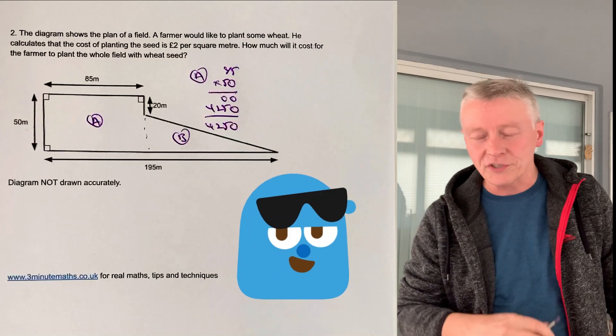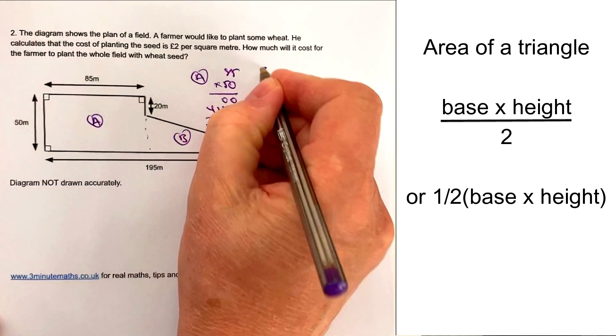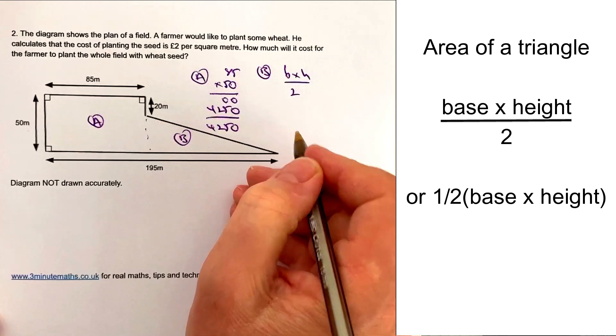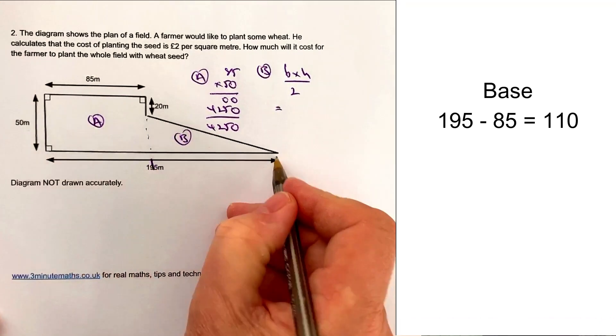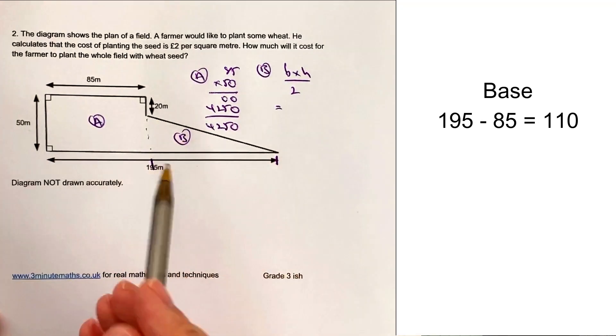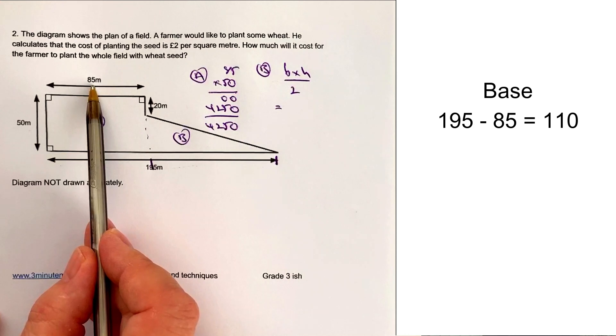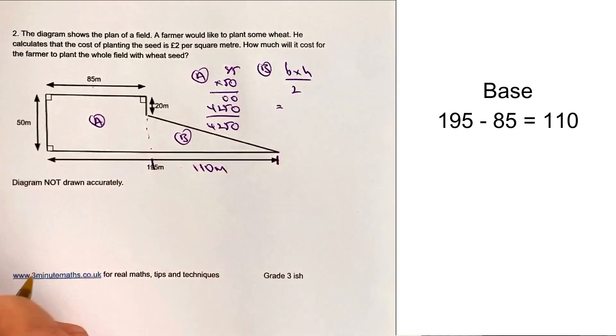Let's have a look at the triangle. We're going to use the area of a triangle formula, which is base times height divided by 2. The base is going to be the difference between this point and this point. Overall it's 195, but I've got to take away 85 from it, so my base is 110 meters.